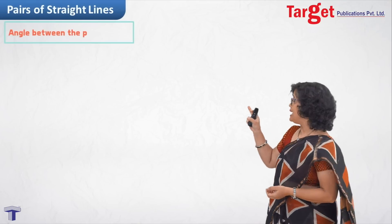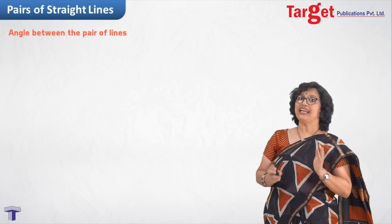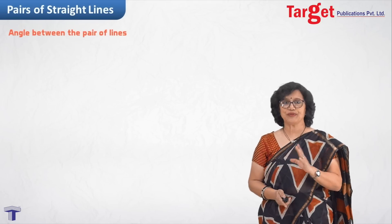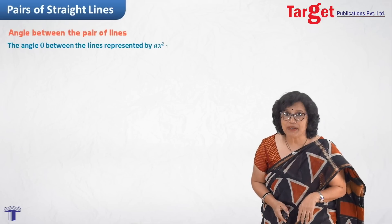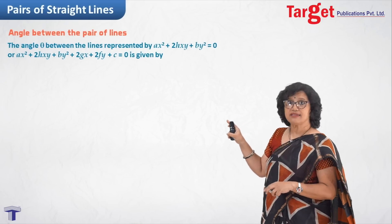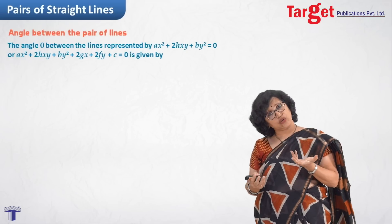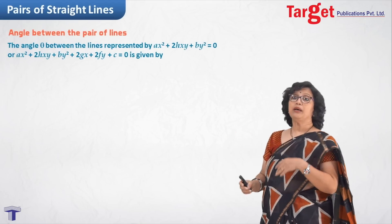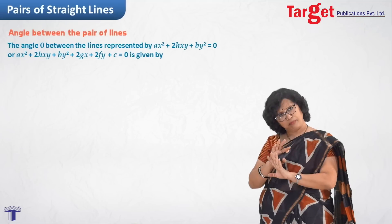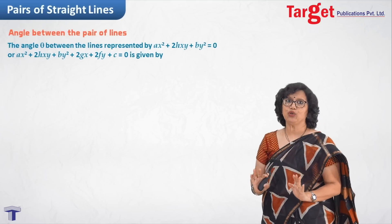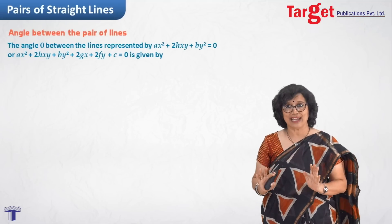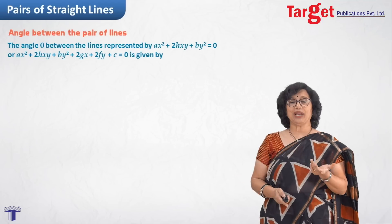Hello everyone. Let us extend the topic 'pair of straight lines' from the last session to some further extent. In this session we will be taking the angle between the lines — pair of lines, that goes without saying. Now, if we have to find the angle between the lines where the combined equation of the lines is given as ax² + 2hxy + by² = 0, or also ax² + 2hxy + by² + 2gx + 2fy + c = 0, means any of the forms is given to you as the joint equation of the straight lines, and if theta is the angle between those two lines, then...